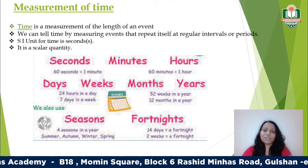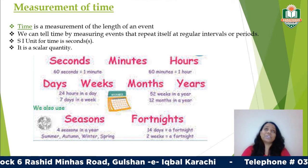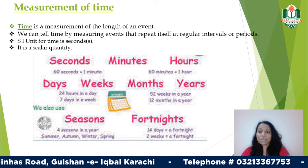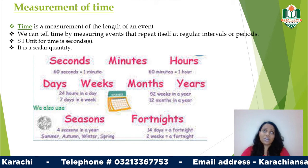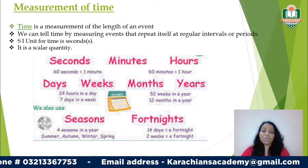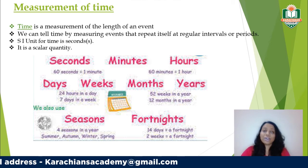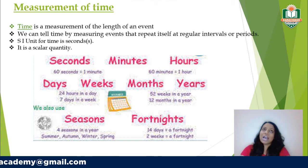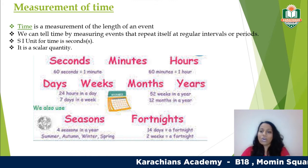From the very beginning, we didn't have time divided into months and years. At that time, time was measured according to the seasons — summer, winter, autumn, and spring — which repeat themselves. Even fortnights were used: a fortnight is 14 days, based on the different sizes of the moon over a 14-day period.